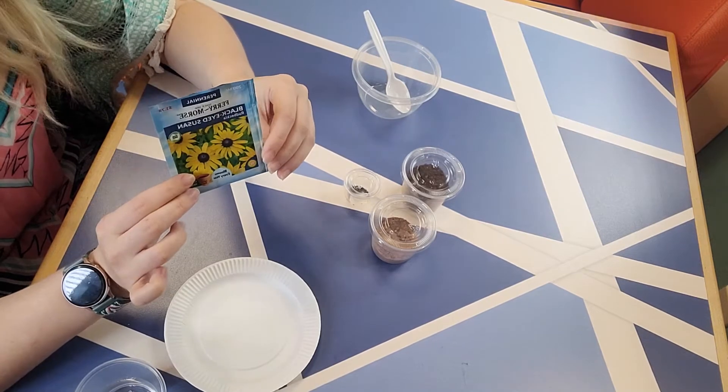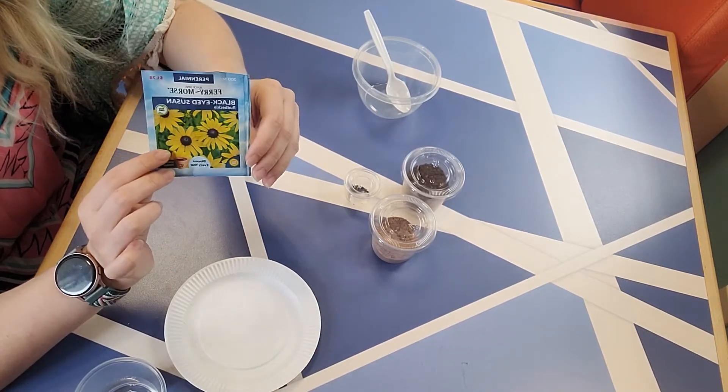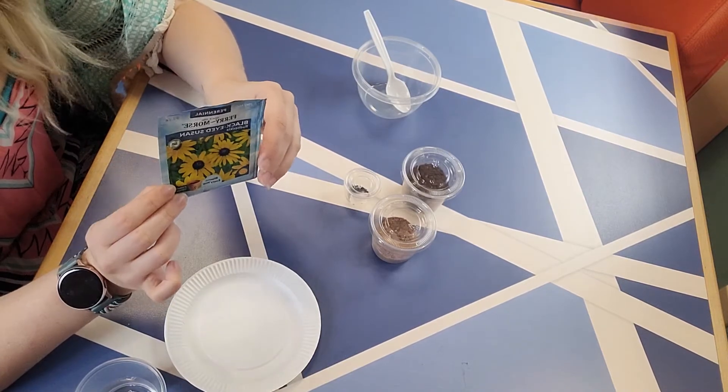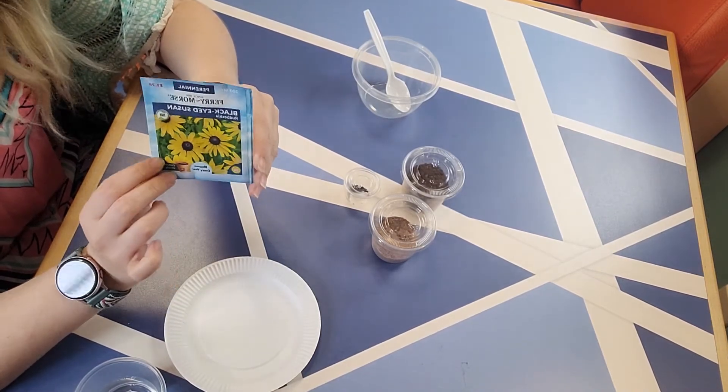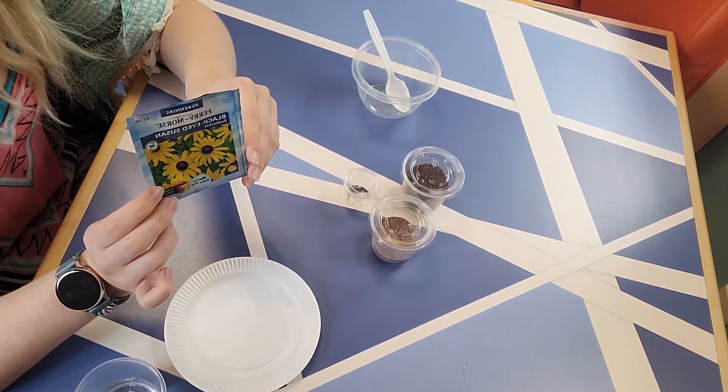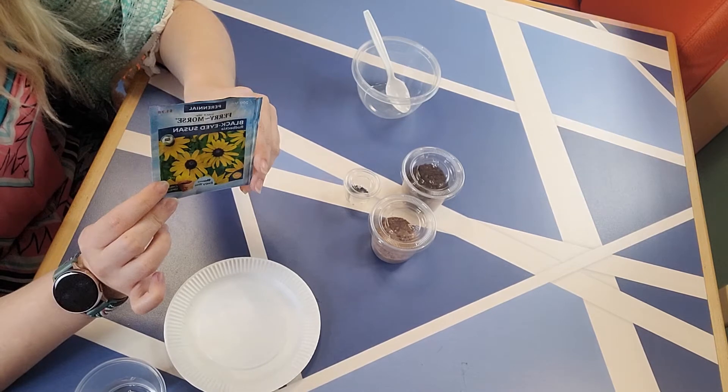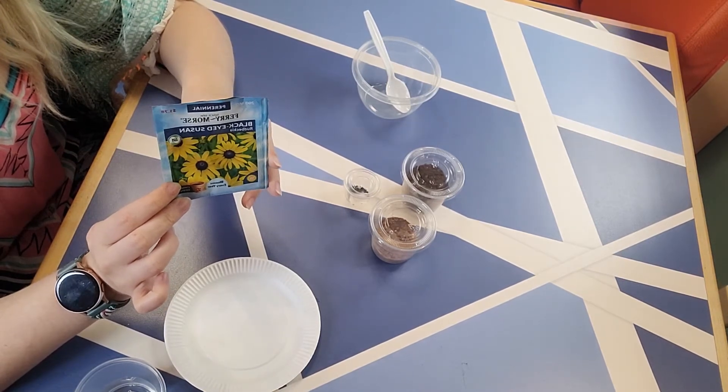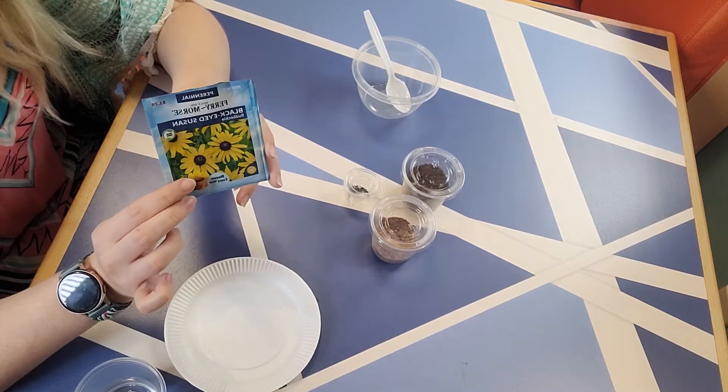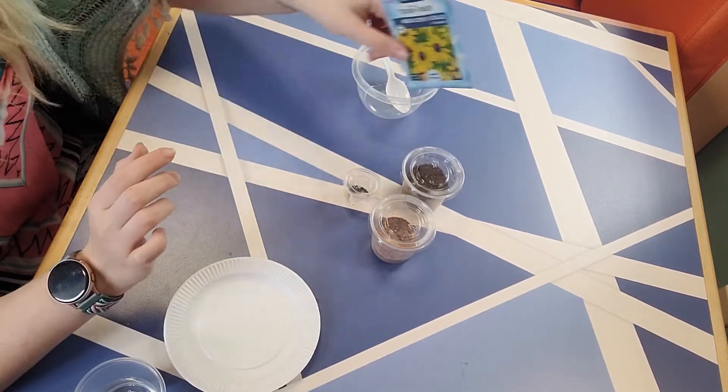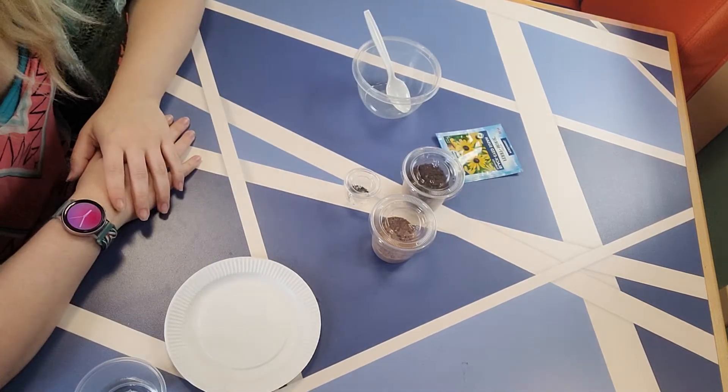So what I have chosen and what is included in the grab and go kits are black eyed Susans. These are also called Rudbeckias. And it's suggested that they are planted in our area sometime between April and June. So once you get these made, then you're going to want to get them planted as quickly as possible. So that being said, let's go ahead and get started in making our seed bombs.